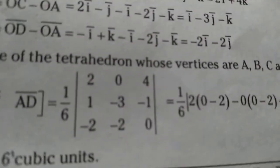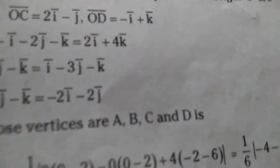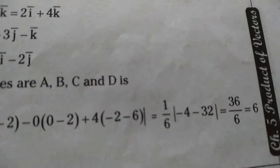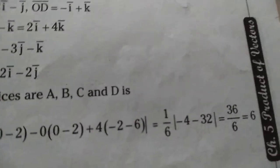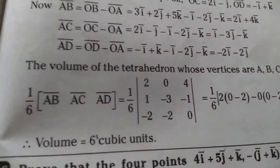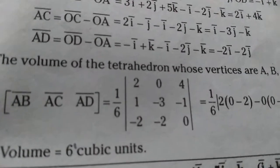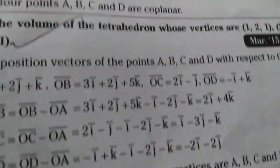Computing the vectors: AC̄ gives one set of components, AD̄ = (-2, -2, 0) which is the third row. Now taking the determinant, volume = (1/6)|[AB̄, AC̄, AD̄]| = (1/6) × 36 = 6. The volume of the tetrahedron is 6 cubic units.